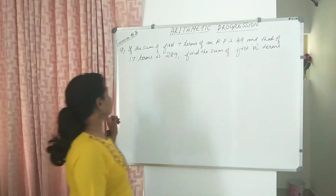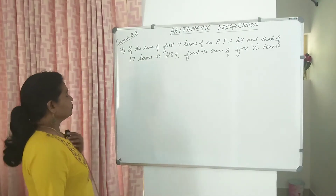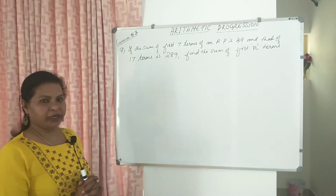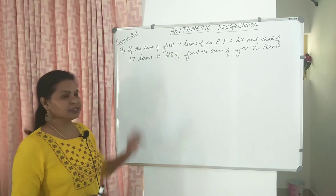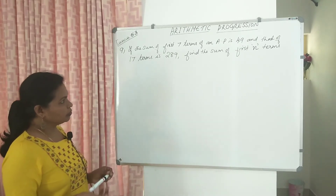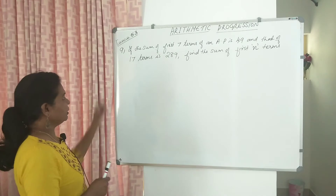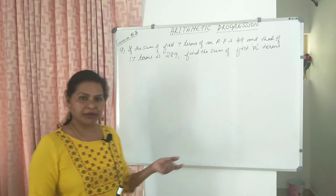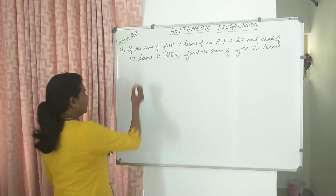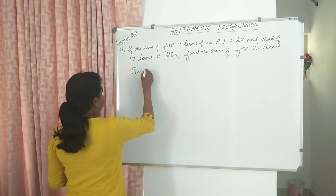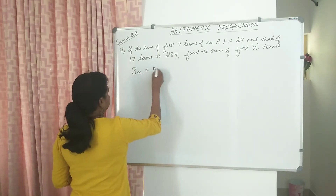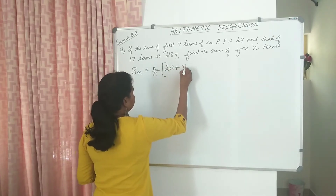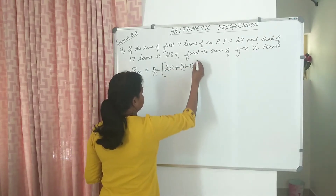If the sum of the first 7 terms of an AP is 49 and that of 17 terms is 289, find the sum of first N terms. So we have to write the formula of sum: Sn equal to N by 2 into 2A plus N minus 1 into D.